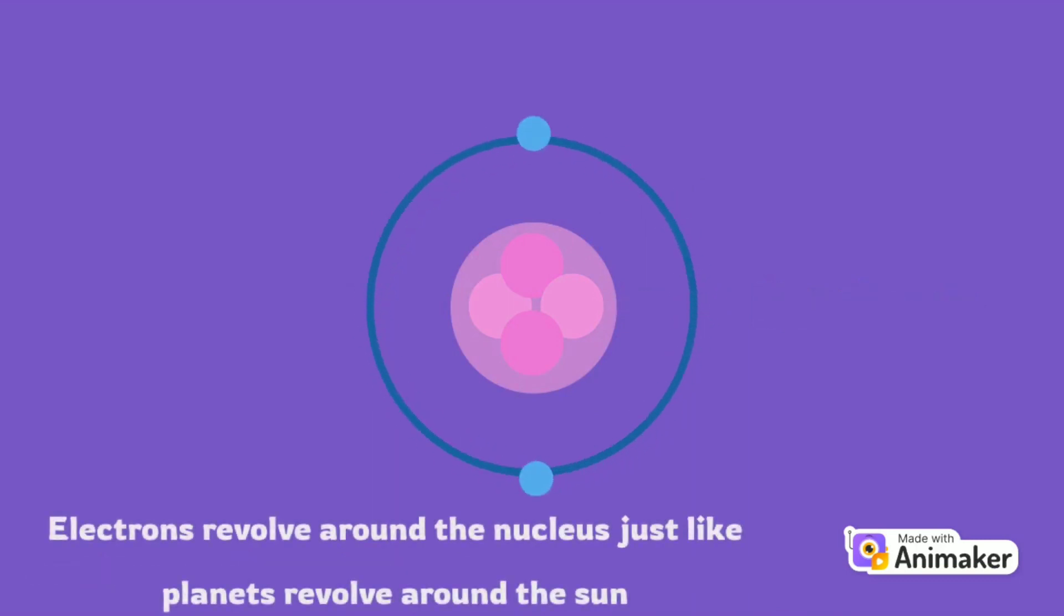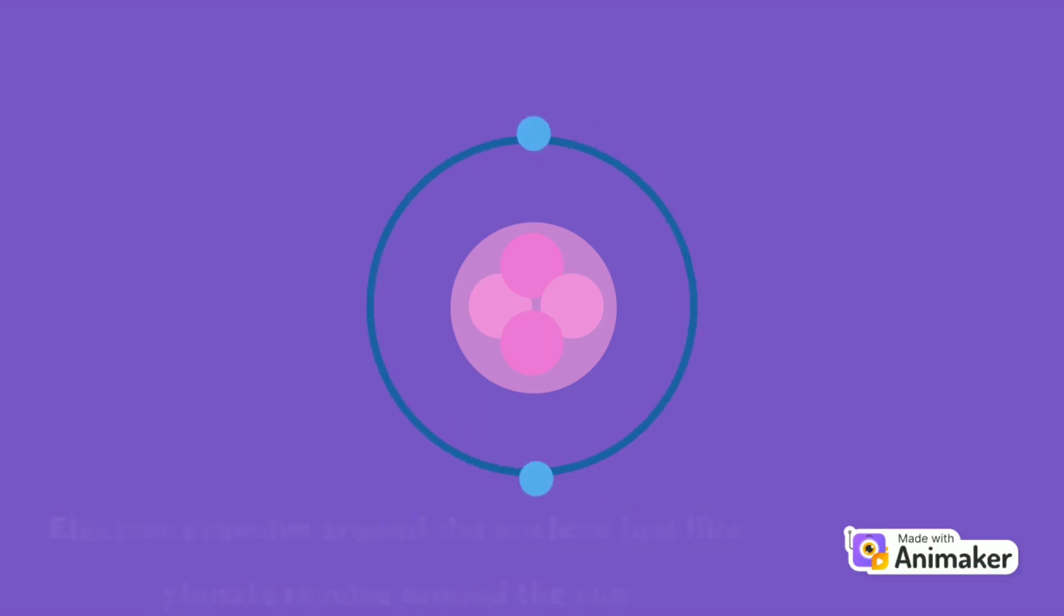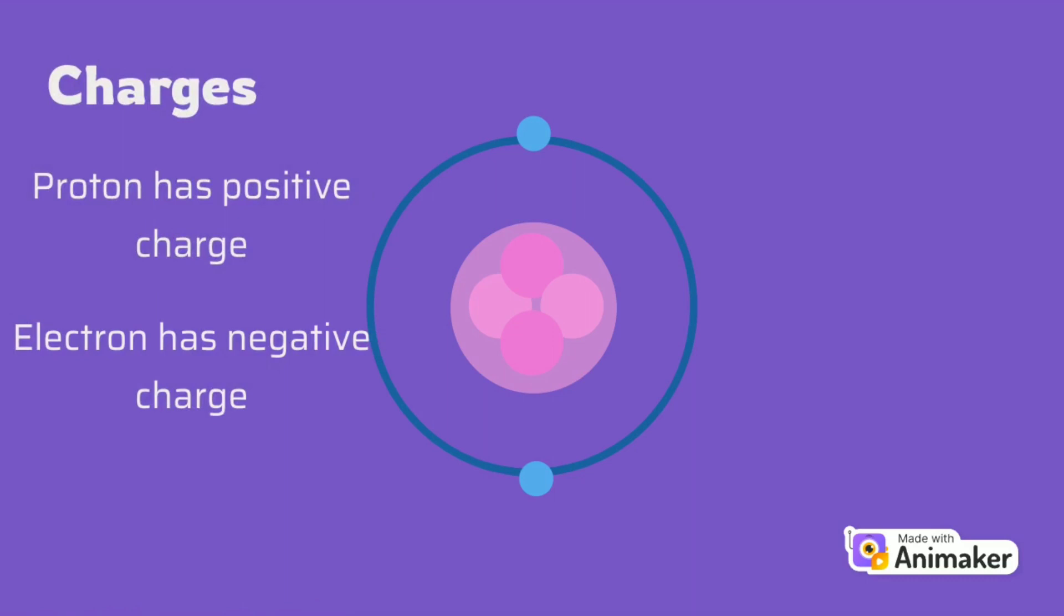Electrons revolve around the nucleus just like planets revolve around the sun. Remember, proton has positive charge, electron has negative charge, and neutron has no charge.